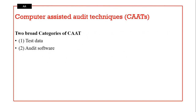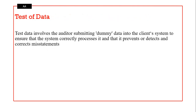Two broad categories of CAATs — computer-assisted audit techniques. Under CAATs we have test data and audit software, where accounting and IT knowledge interface. Test data involves the auditor submitting dummy data into the client's system to ensure the system correctly processes it and prevents, detects, or corrects misstatements. For instance, if account assistants are not supposed to post transactions, the auditor can ask them to try and see whether the system rejects their posting.